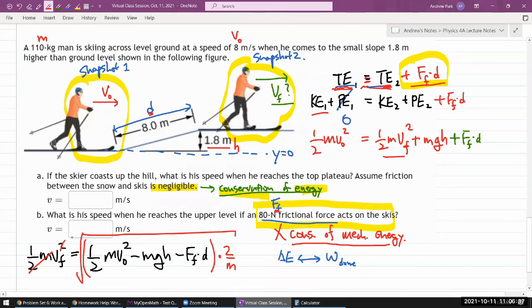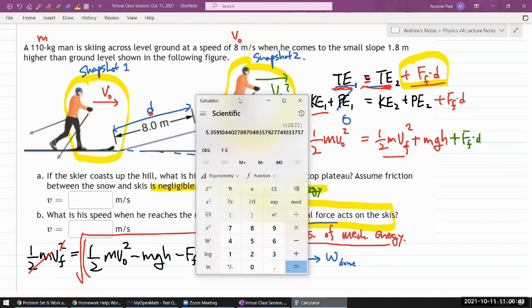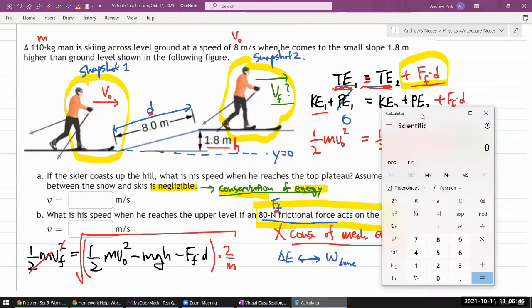I don't think this whole thing really simplifies all that much. So I'll just plug in the numbers as it is. If there were some meaningful way this would simplify, I would, but it doesn't. So 0.5 times mass 110 times v naught 8 squared minus mass 110 times 9.8 times height 1.8 minus friction force 80 newtons times 8 meters for the distance along the slope. And I think that's all. That's all the quantities in the parentheses.